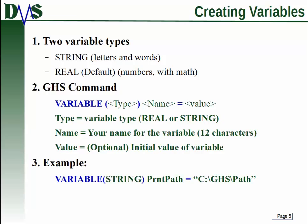How do you actually declare a variable? The GHS command is VARIABLE, and then you have parentheses. Within the parentheses, you type the name of your variable. In our case, we're only talking about real or string variables. Then you type the name of your variable, whatever name you want it to be. It can be numbers and letters, but it can only be 12 characters long.